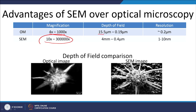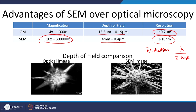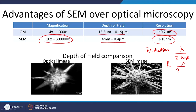The depth of field in an optical microscope is 15 to 0.19 micrometers, but in the SEM it is 4 mm to 0.4 microns. The resolution of an optical microscope is 0.2 micrometer, whereas the resolution of an SEM is only 1 to 10 nanometers. The resolution formula is R = λ / (2 × NA), where λ is the wavelength of incident light. Using the best quality lens with numerical aperture of 1.5, R = λ/3. Resolution is the capability to resolve two closely spaced points in the image.